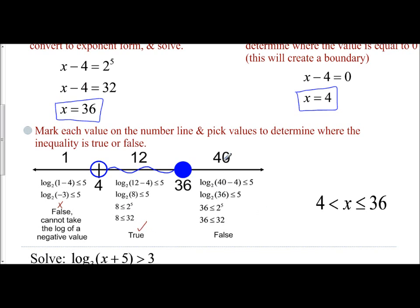Same idea. If I were to plug in 40, 40 minus 4 is 36. So is 36 less than or equal to 2 to the 5th power? 36 is less than or equal to 32 is false. And so my solution space only exists between these values of 4 and 36. And that is what my inequality statement says.